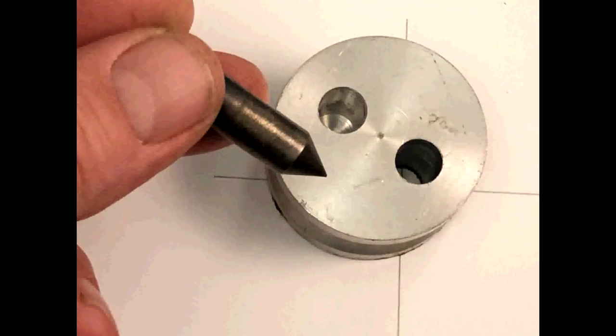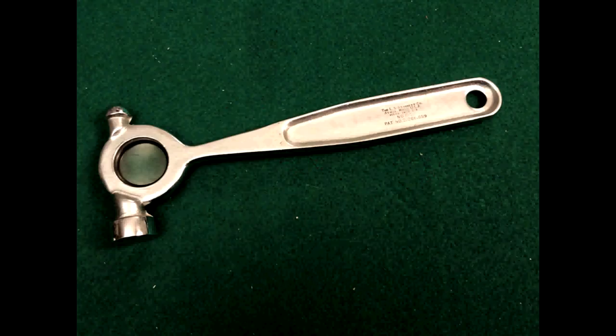Here's some history for you. This very cool Starrett number 815 toolmaker's hammer is a really cool piece. This is actually my brother's. I have two of these, my brother's and my father's. They still make these. It's got a magnifying glass right here with an O-ring so when you hit your center punch, you don't crack the glass. Pretty ingenious, right?